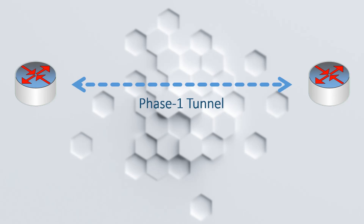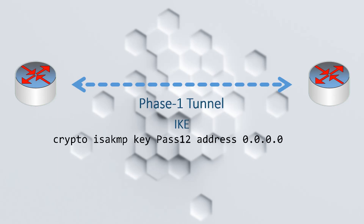These endpoints create a connection between each other, called a phase 1 tunnel. This can be a little confusing — while this is called a tunnel, it has nothing to do with our GRE tunnel yet; this is just IPsec's terminology. IPsec uses a protocol called IKE to establish the phase 1 tunnel. Part of its job is to authenticate the remote endpoint. The simplest authentication is a pre-shared key, which is a password configured on both routers. IKE checks that the passwords match between the local and remote devices.